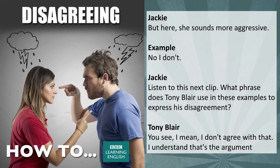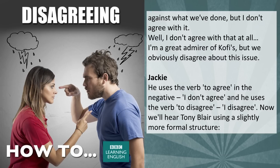What phrase does Tony Blair use in these examples to express his disagreement? 'I don't agree with that. I understand that's the argument against what we've done, but I don't agree with it.' 'Bending the intelligence.' 'Well, I don't agree with that at all.' 'I'm a great admirer of Kofi's, but we obviously disagree about this issue.' He uses the verb 'to agree' in the negative — 'I don't agree' — and he uses the verb 'to disagree' — 'I disagree.'